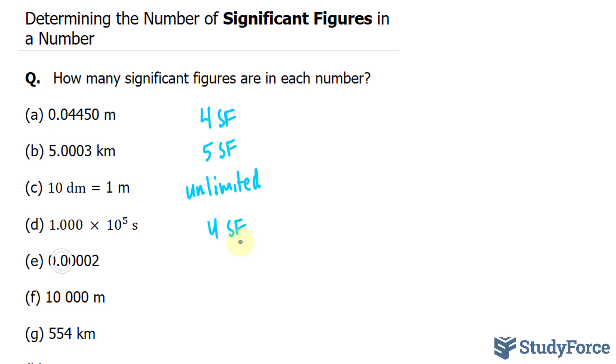In question E, we have 0.00002. Here we only have one significant figure. Remember these leading zeros are not important. Had we had zeros over here, then they would be significant.